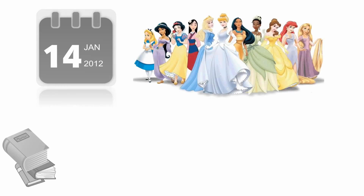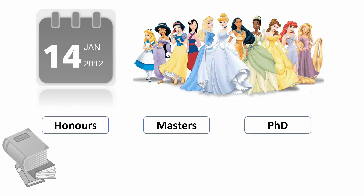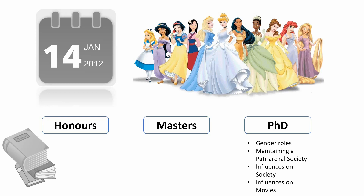Here's an example. You found a gap that says future researchers should focus on the impact of fairy tales on women. The number and magnitude of angles you will cover will be significantly different depending on the degree you are pursuing. In my department, honours students are required to write a 5,000-word paper, while a master's student has to write a 25,000-word dissertation and a PhD student has to write an 80,000-word thesis. At a PhD level, you may look into gender roles, maintaining a patriarchal society, influences on society at large, and influences on movies. For your master's, you could opt to focus only on gender roles and gender-based inequality. For your honours, you basically have just enough time and paper length for one angle, so you could choose, perhaps, gender roles.